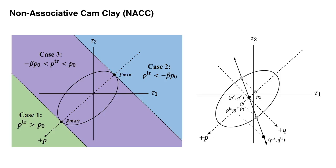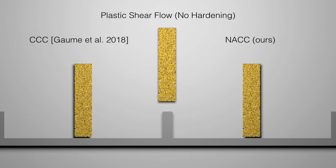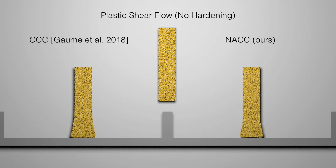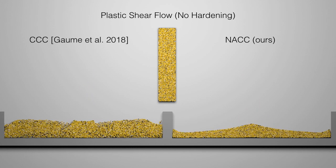For our second approach to dynamic fracture, we propose an easy-to-implement non-associative CAM-Clay plasticity model with a novel fracture-friendly hardening scheme. Please refer to the paper and supplemental document for more detailed explanation. Compared with the cohesive CAM-Clay model used recently by Gollm et al., our NACC model better preserves volume due to our enforcement of a non-associative flow rule.